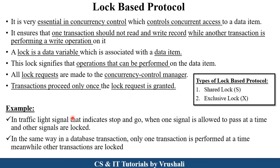Let's take a real-life example. In a traffic light signal, there are three signals: red, yellow, and green. When there is a red signal, it means stop; green signal means go. When one signal is active, the other signals are locked. When the red signal is there, yellow and green signals are locked. This is called a lock-based protocol, and the same concept applies in database transactions — that's why it maintains consistency in the database.